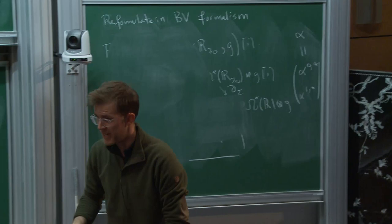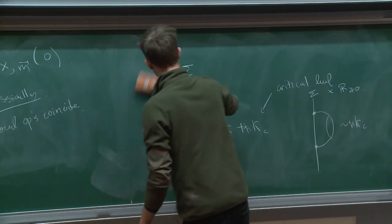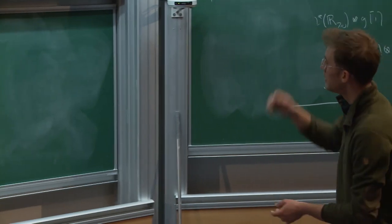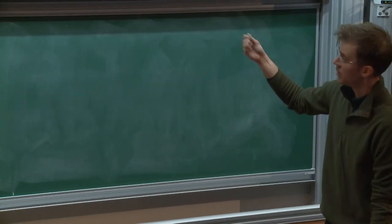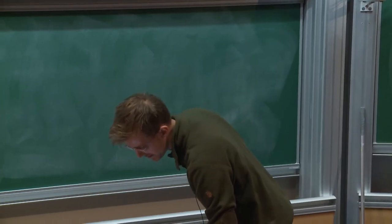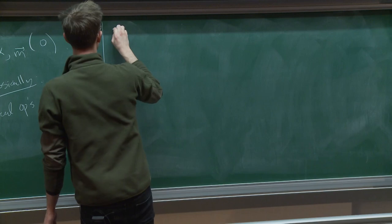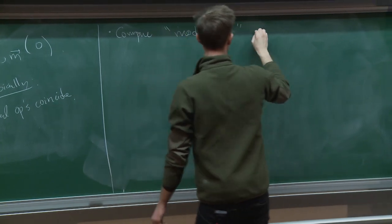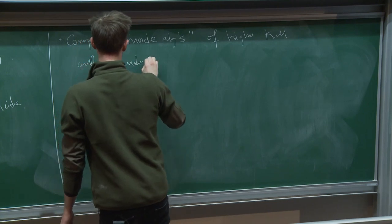At the quantum level, it's simplest to compare the mode algebras rather than the full factorization product structure, since there's not yet an efficient way to write down the full OPE structure for a higher dimensional holomorphic factorization algebra — that would require generalizing chiral algebras to arbitrary dimensions. So we compare what are called the mode algebras of the higher Katz-Moody and the boundary operators.